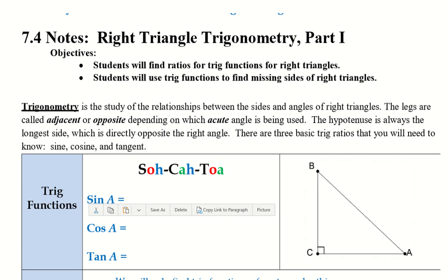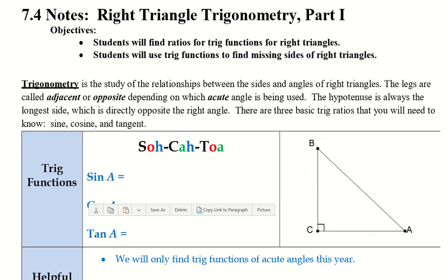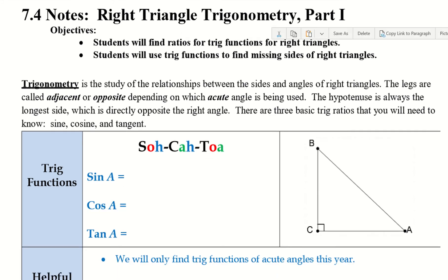There are three basic trig ratios that you will need to know: sine, cosine, and tangent. So, trig functions — we have sine, cosine, and tangent.